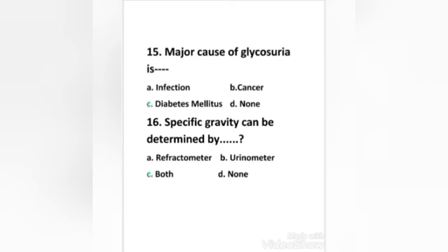Next question: specific gravity can be determined by: refractometer, urinometer, both, or none. Right answer is option C, both — specific gravity can be determined by both refractometer and urinometer methods.